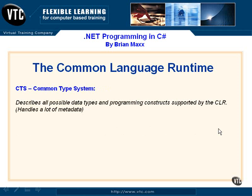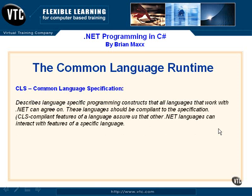The common language specification is the third part. It describes the language-specific programming constructs and elements that all .NET languages can agree on. You might see the term 'CLS compliant' — this means that features of a language can be understood by and interact with other languages. You don't necessarily need to use the same language when programming; you can bring different languages and modules of code together and everything can interact very nicely.